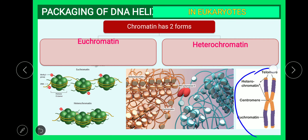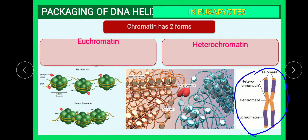Looking at the chromosome diagram, a chromosome has two chromatids joined at a narrow region called the centromere. When two chromatids are joined, this is called the dyad stage of the chromosome. In a stained chromosome, we can observe darkly stained areas and lightly stained areas.